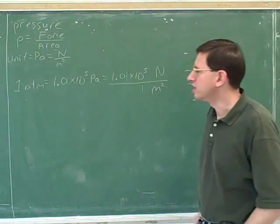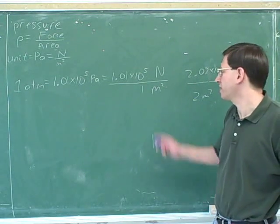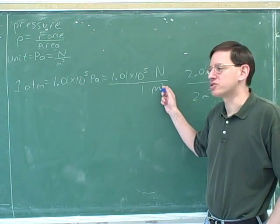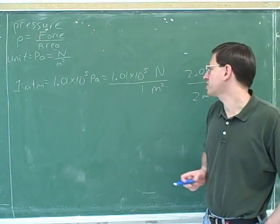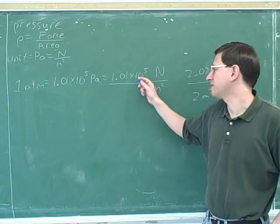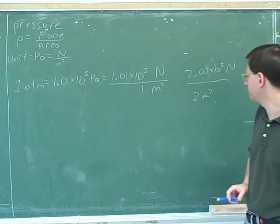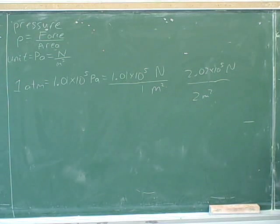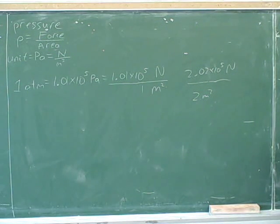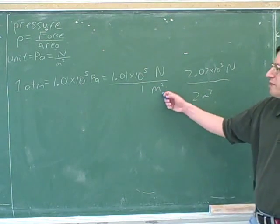This is why we need the idea of pressure. We can't just say what the force is because the force depends on how big an area you're looking at — the bigger the area, the bigger the force. It's convenient to use the concept of pressure, which is constant everywhere at 1.01 times 10 to the fifth Newtons for every square meter. Pressure and force are different things, but knowing one helps you find the other.